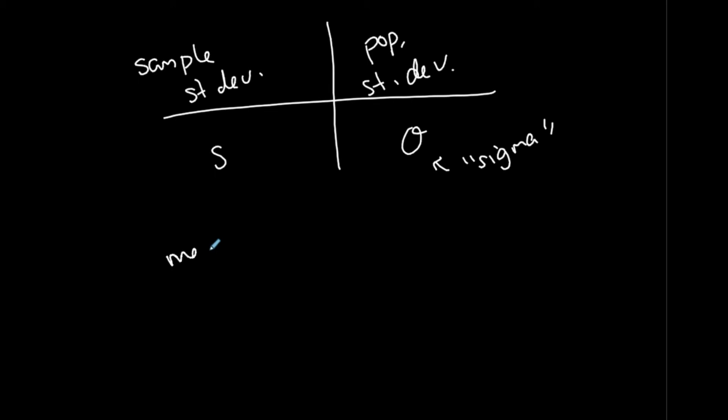I hope you remember for your mean, your sample mean was x-bar and your population mean was mu. Now your sample standard deviation is s and your population standard deviation is sigma.